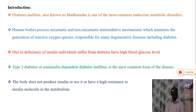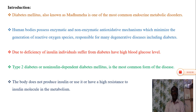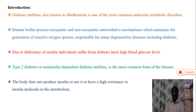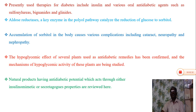Individuals suffering from diabetes have high blood glucose levels. There are two types of diabetes: type 1 and type 2. Type 2 diabetes, also referred to as non-insulin-dependent diabetes mellitus, is the most common form of the disease. Around 80 to 90 percent of India's population is affected by type 2 diabetes, and they have a very high resistance to the insulin molecule in the metabolism process.